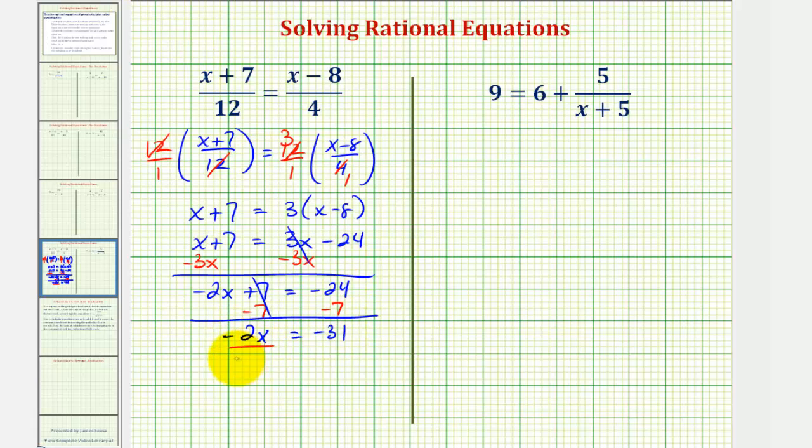Divide both sides by negative 2, and we have x equals positive 31 halves.